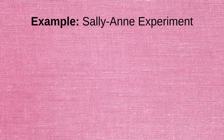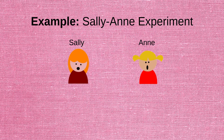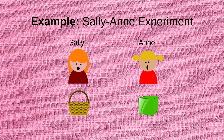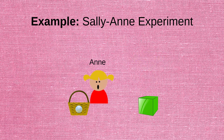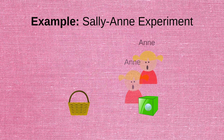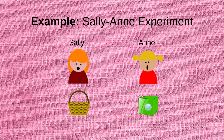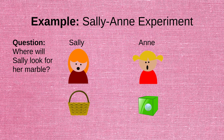An example of a false belief task is the famous Sally-Ann experiment. In this experiment, children are presented with a short skit involving two dolls named Sally and Ann. While Sally has a basket, Ann has a box. Sally takes a marble that she's playing with and places it in her basket. When she leaves, Ann takes the marble from Sally's basket and hides it in her box. When Sally returns, the child who watched the skit is asked the question: where will Sally look for her marble?